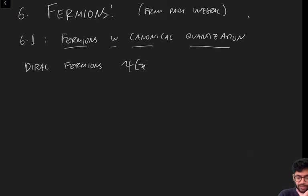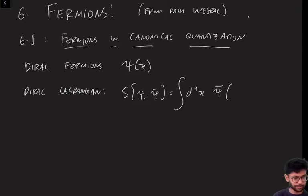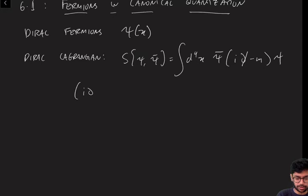A Dirac fermion is given by some field psi of x, and psi of x is quantized in such a way so that its canonical commutation relation results in a fermion. To be more precise we can write down the so-called Dirac Lagrangian. The Dirac Lagrangian takes the form S of psi and psi bar equals to the integral d4x psi bar i d slash minus m psi. And the variation of this action with respect to psi gives you the Dirac equation, which is of course i d slash minus m psi equals to zero. And just to remind you this slash is just notation. The slash is defined to be gamma mu d mu, and you'll study the properties of the gamma matrices in QFT.